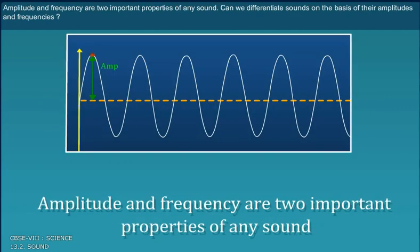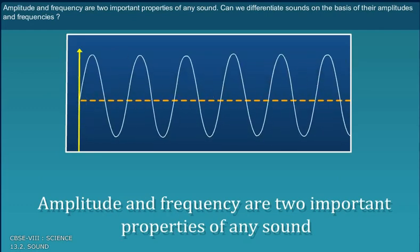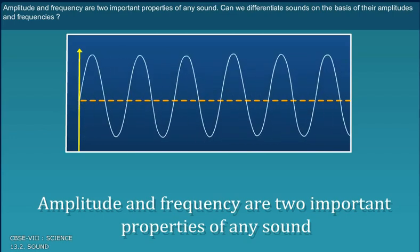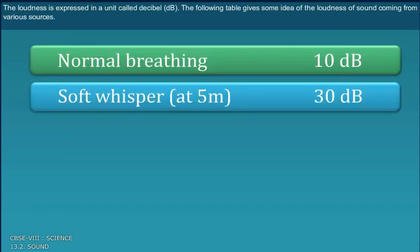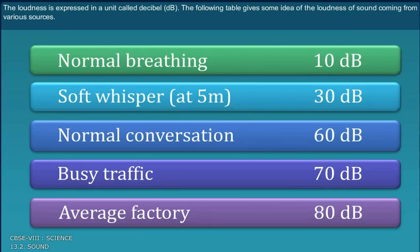Amplitude and frequency are two important properties of any sound. Can we differentiate sounds on the basis of their amplitudes and frequencies? The loudness is expressed in a unit called decibel, dB. The following table gives some idea of the loudness of sound coming from various sources.